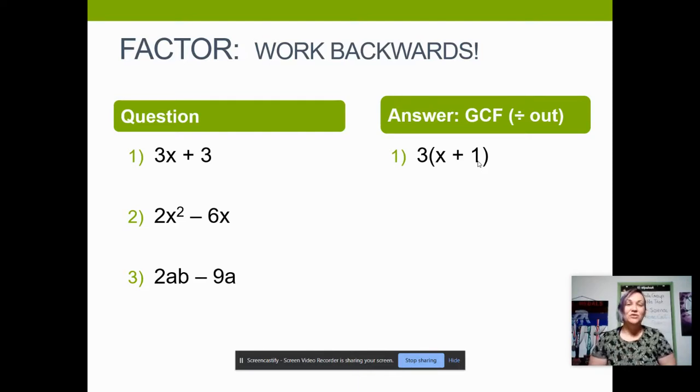For my next example, 2x squared minus 6x, my GCF is 2x. 2 and 6 are both divisible by 2, and both terms do have a letter x. Left over on the inside, I have an x minus 3.